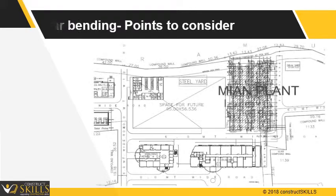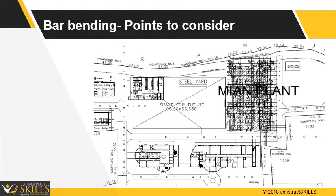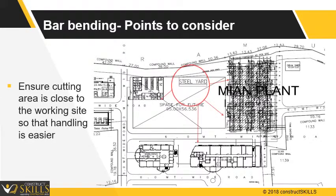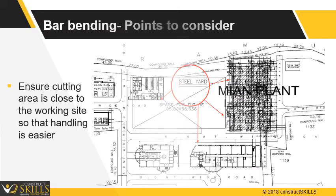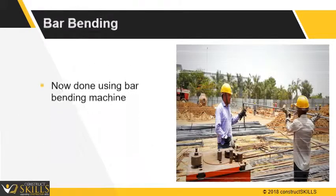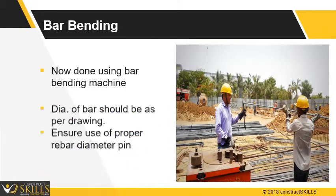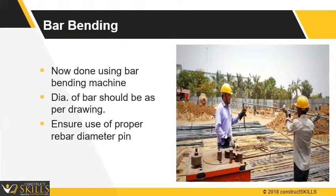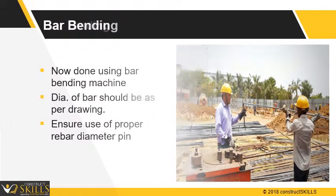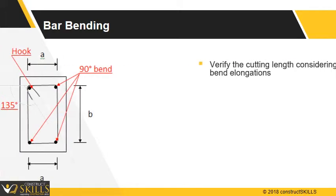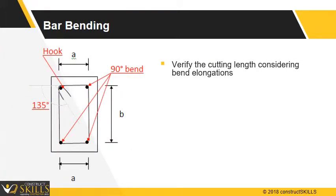Some points to consider while bending bars: ensure that the cutting area is near to the working site so that handling will be easier. It is done on a bar bending machine. Ensure the diameter of the bars is as per drawings. Verify the cutting length considering bend elongation, so there will be no shortage in bar length after bending.